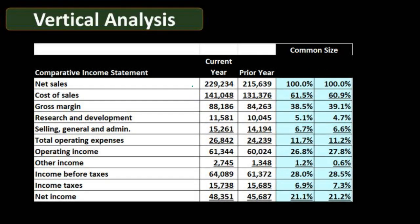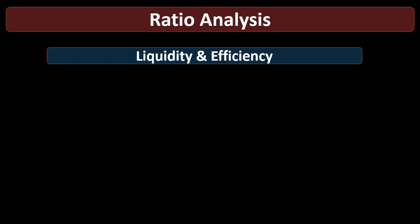We can do the same thing for the income statement, where we compare everything to the most important number — net sales, the revenue generation line. For example, cost of goods sold of 141,048 divided by net sales of 229,234 gives us 61.5%. We compare everything on the statement to sales to get an idea of each item's percentage relative to revenue generation. Again, each column relates only to itself — this is vertical, not horizontal analysis.